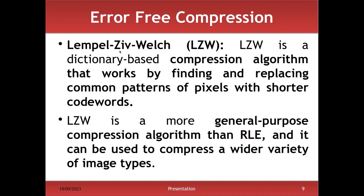Another algorithm is LZW — Lempel-Ziv-Welch. This is another error-free compression technique. It works by finding and replacing common patterns of pixels. The common pattern of pixels is first identified, then replaced by shorter code words. This is a general-purpose compression algorithm, and a wider variety of image types can be compressed using it.